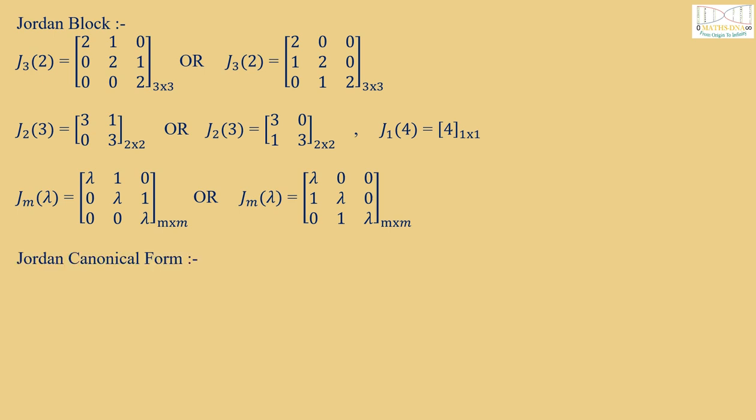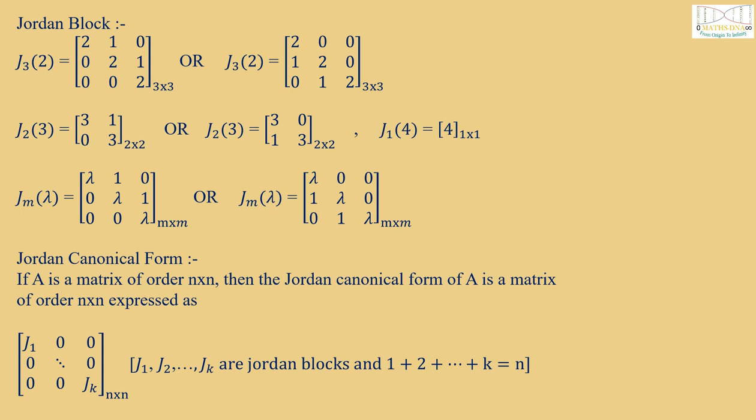Now Jordan canonical form. If A is a matrix of order n×n, then the Jordan canonical form of A is a matrix of order n×n expressed as J₁, J₂ up to Jₖ on the diagonals and rest of the entries are 0, where J₁, J₂, Jₖ are the Jordan blocks. Also, ℓ₁ + ℓ₂ + ... + ℓₖ equals n, the order of the matrix.